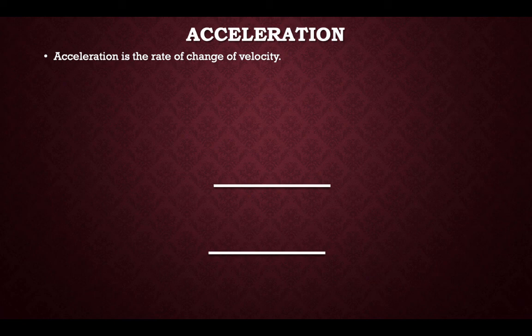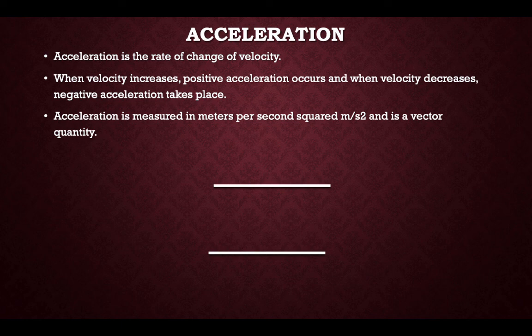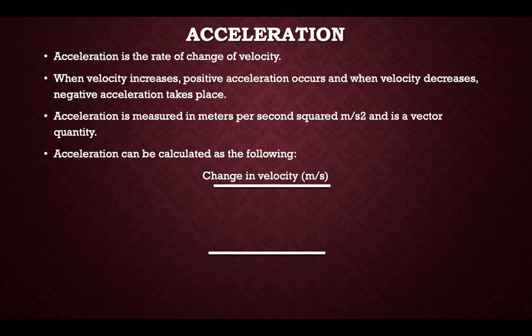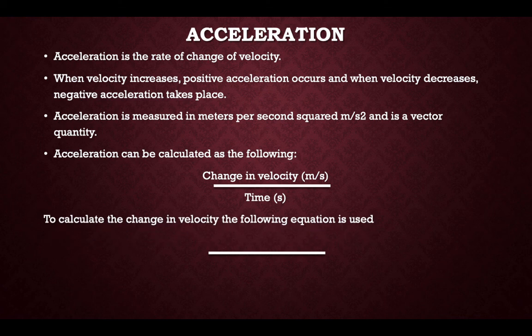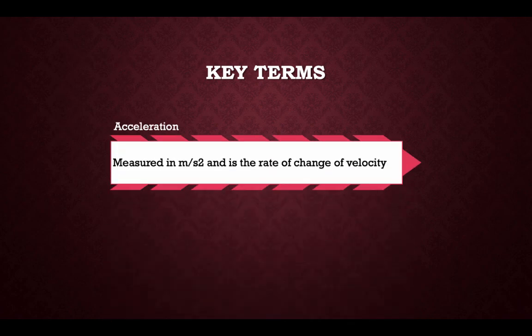Acceleration is a rate of change of velocity. When velocity increases, positive acceleration occurs; when velocity decreases, negative acceleration occurs. Acceleration is measured in metres per second squared and is a vector quantity. It can be calculated as: change in velocity divided by time — specifically, final velocity minus initial velocity, divided by time taken. Key term — acceleration: measured in metres per second squared, it is the rate of change of velocity.